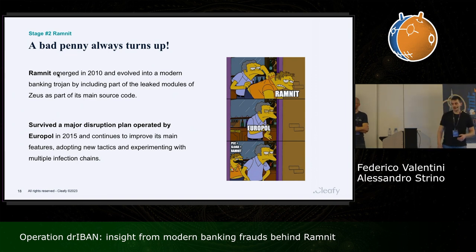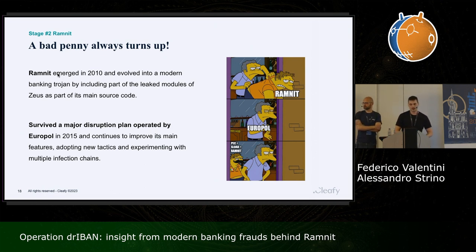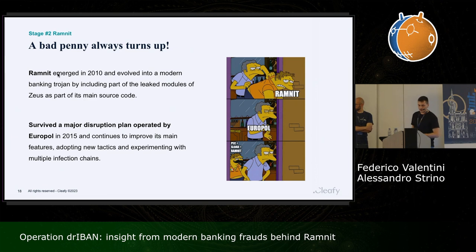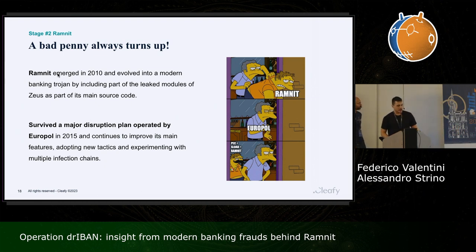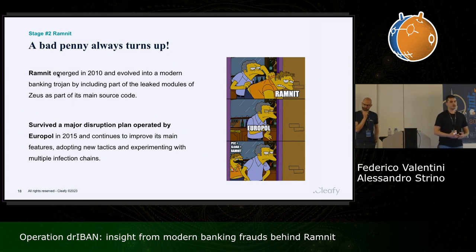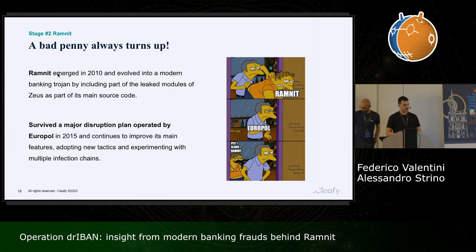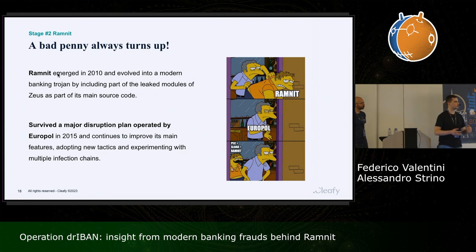Ramnit is a very old, well-known banking trojan. It emerged back in 2010 but initially acted as a worm without banking trojan capabilities. Starting around 2016, they began inserting leaked parts of the Zeus source code — one of the most notorious banking trojans. Another important fact: Ramnit survived a major disruption operation by Europol in 2015, and after that continued to improve its functionality, adding new tactics and experimenting with new infection chains.